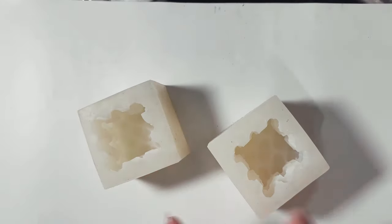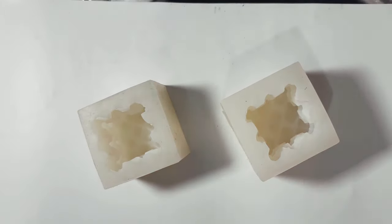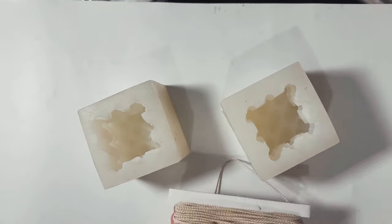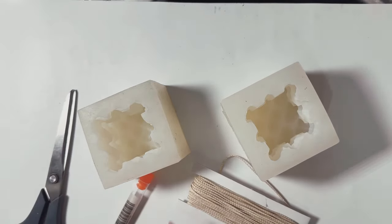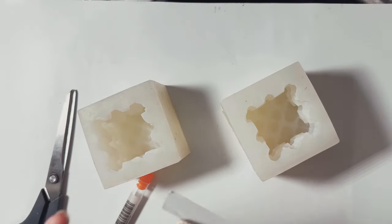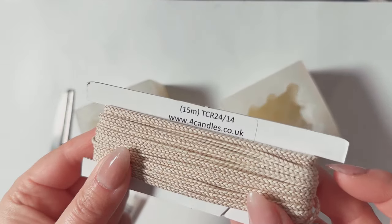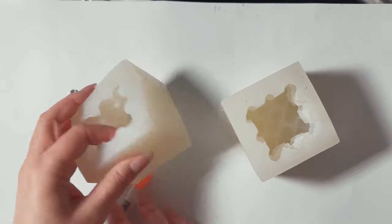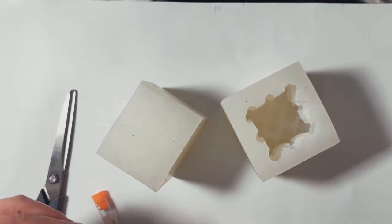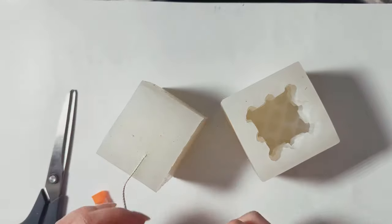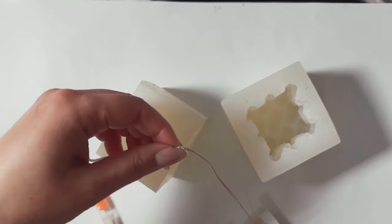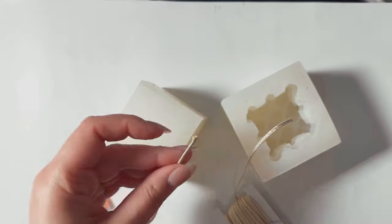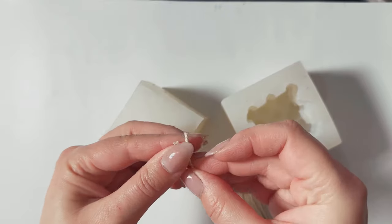First things first, while your wax is melting on your double boiler, we are preparing our molds and cutting the wicks. Here I'm using TCR 24 for these candles. I like to leave a little bit of length above and below the candle, so I'm checking that and cutting two of them.